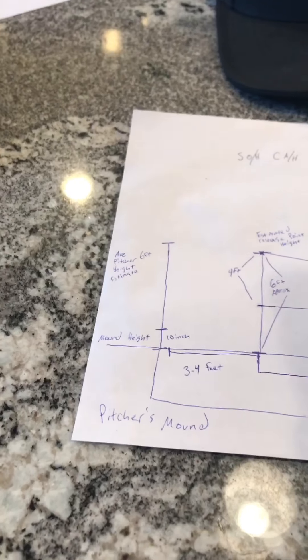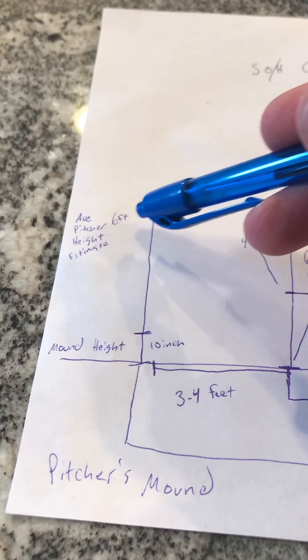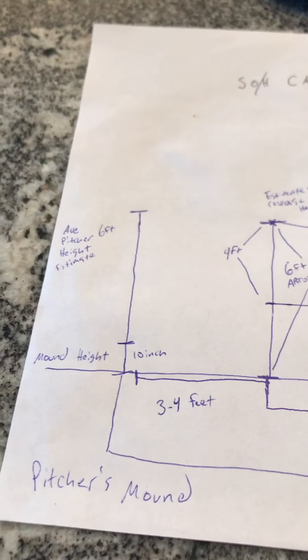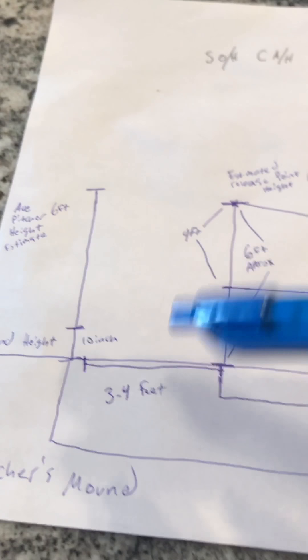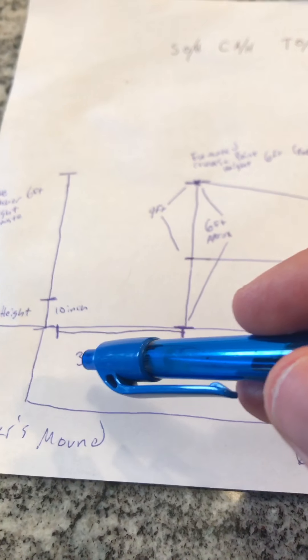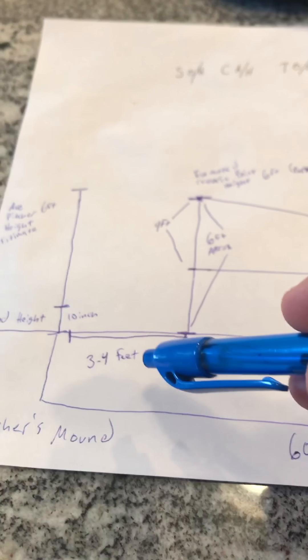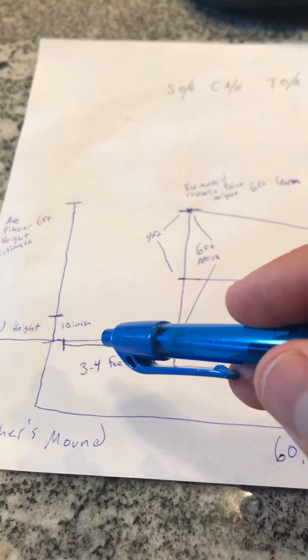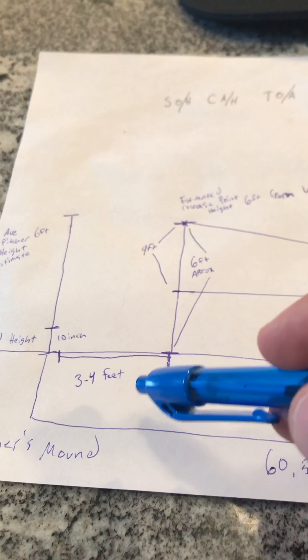If you look right here, we got mound height 10 inches, average pitcher height about 6 feet. These are kind of guesstimates, they don't need to be perfect. The average that your body is sliding down the mound when you're starting out, 3-4 feet.